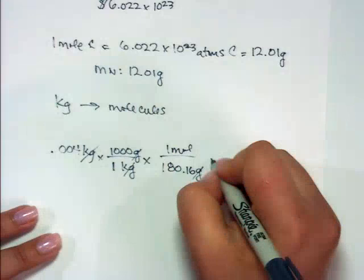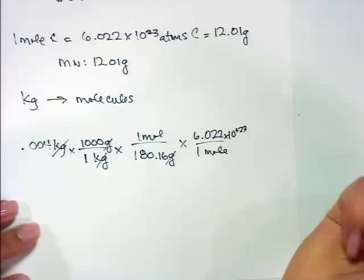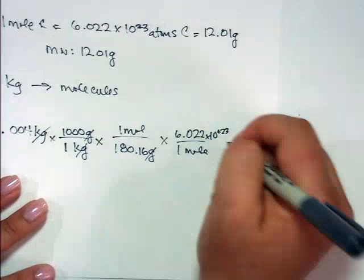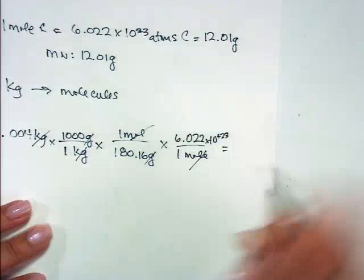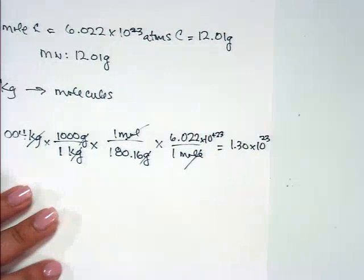And so now we can use Avogadro's number. Oops, I don't know why I wrote minus. 6.022 times 10 to the 23. And when you multiply this out, you end up with 1.30 times 10 to the 23 molecules of sugar in a can of Coke. That's a lot of sugar.